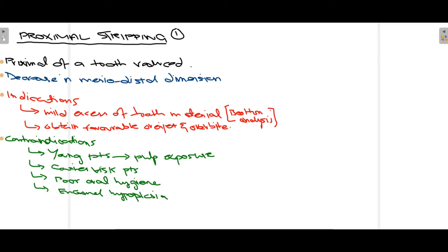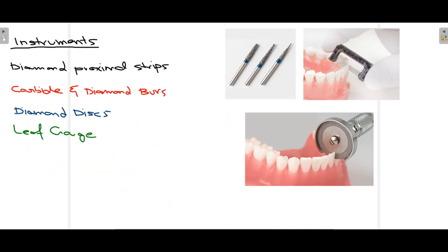There are also certain contraindications for proximal stripping. First, young patients — in young patients the pulp chamber is large, so there is a chance of pulp exposure. Second, patients who are at risk of caries. Third, patients with poor oral hygiene. And lastly, patients who have enamel hypoplasia. In these four cases, proximal stripping is not performed.